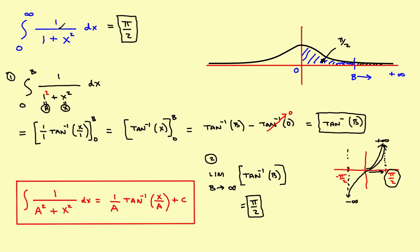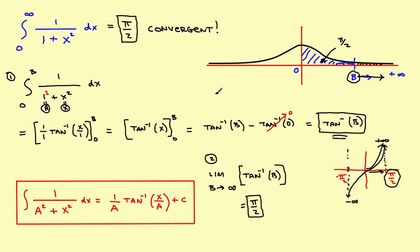Since the integral settled on a fixed number, it is convergent — this is a convergent problem. To recap the two-step process: first, pick some number b and evaluate the definite integral in terms of b. Then, to find the integral all the way out to infinity, take the limit as b approaches infinity of that result. If it settles on a fixed number, it's convergent; if it turned out to be positive or negative infinity, it would be divergent. Here, we got pi over two — convergent. That's a sample of an improper integral that uses one of your inverse trig function integrals.